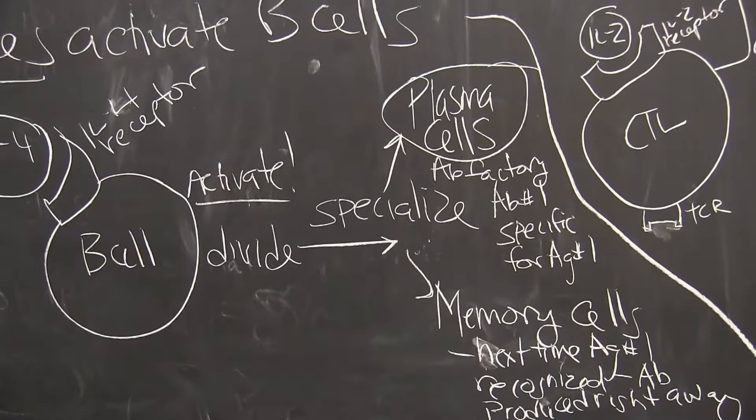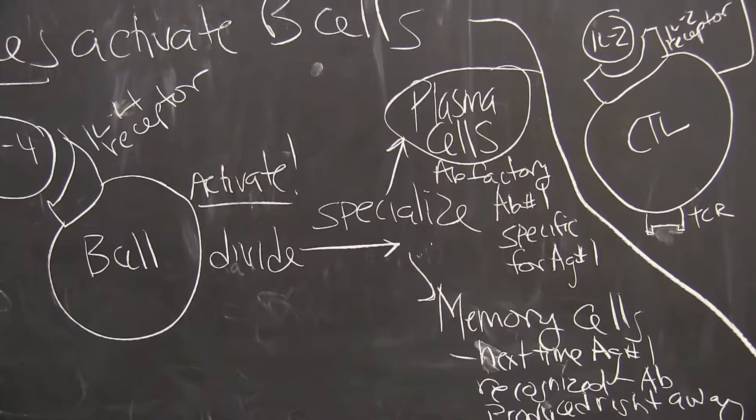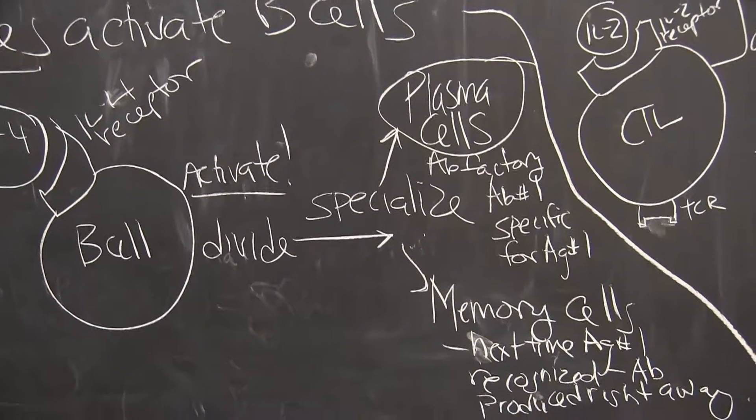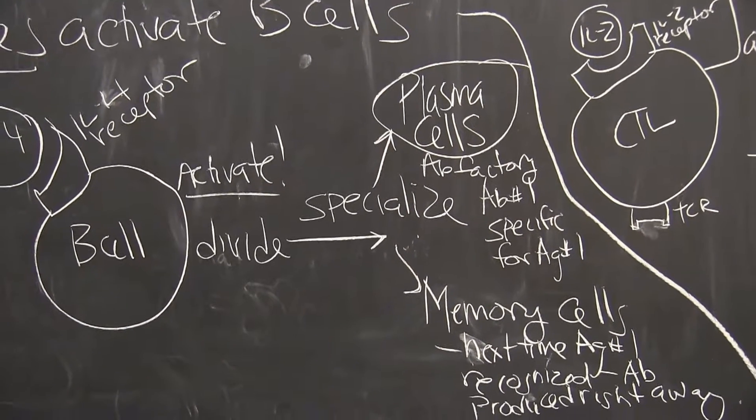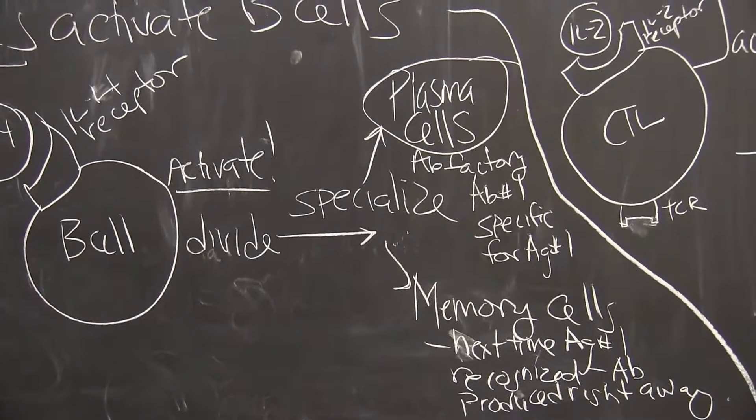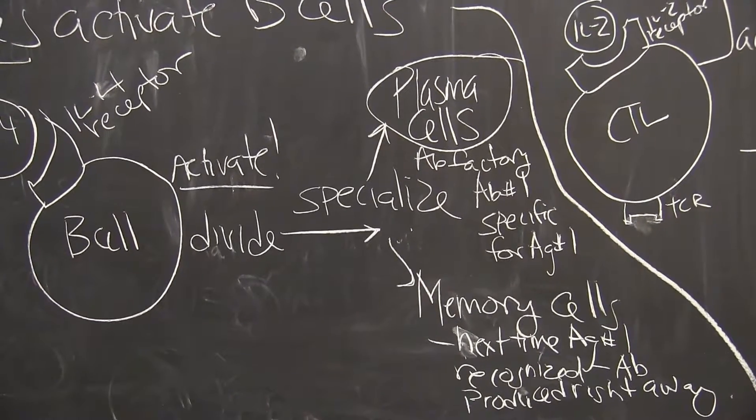The antibodies that are made by this plasma cell, by these B cells, would not work against another antigen that came from a different part of our pathogen. A whole other B cell would have to be made for that.